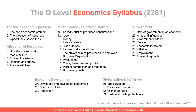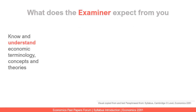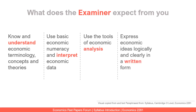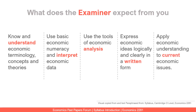When you do the syllabus, what does the examiner expect from you? The first thing the examiner wants to know is how well you understand economic terminology — that is the bare minimum. Then the concepts and theories, how you use basic economic numeracy, and how you interpret economic data — this is especially important when doing the cases in paper two. You should also use the tools of economic analysis and express economic ideas logically and clearly in written form.